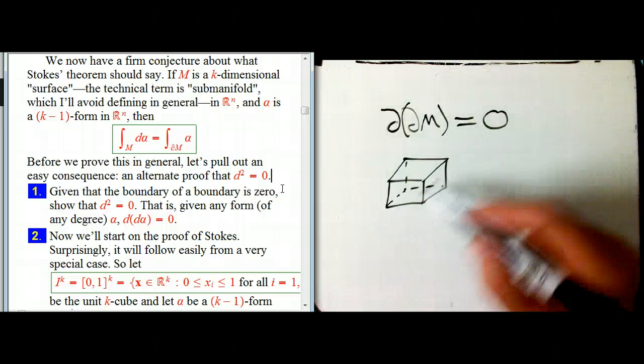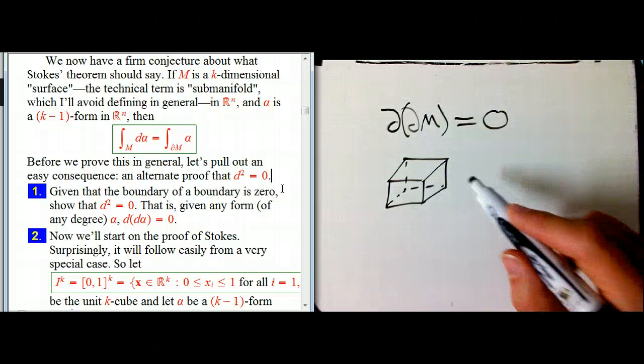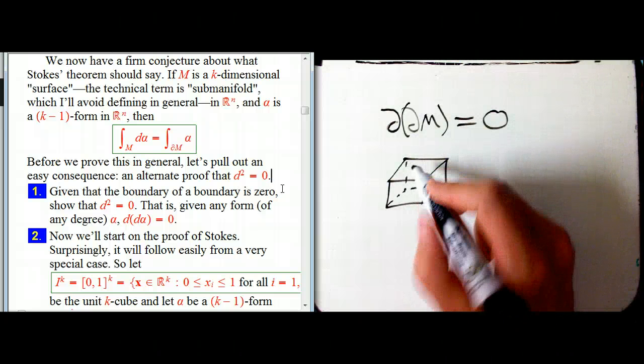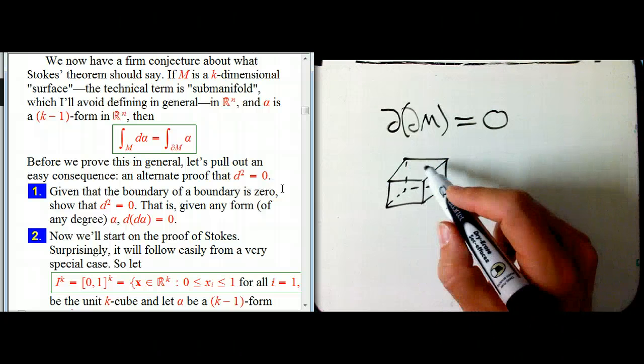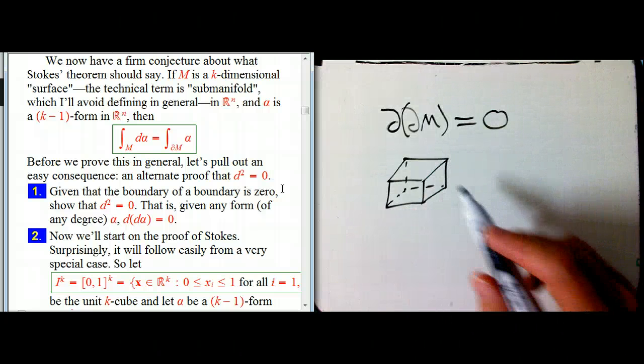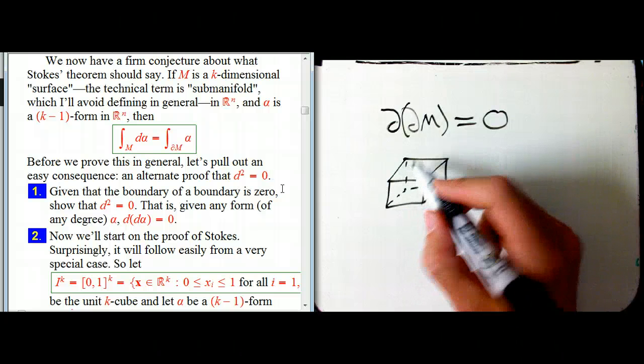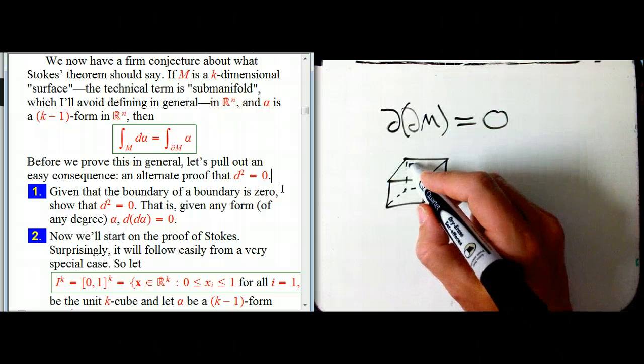We have to keep real careful track of orientations. Let's orient the cube in such a way that when we look at its boundary, we get a consistent orientation all over its boundary. So we want a good way to think about boundaries, about orientations, is like a swirl. I've talked about this before.